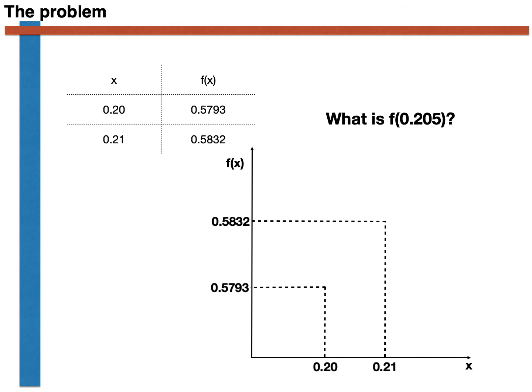We thus have two points in the Cartesian plane which we know the function must pass through. We are not given any further information in the table, however, so the curve that illustrates the function in the plane can take any shape as it passes between these two points.